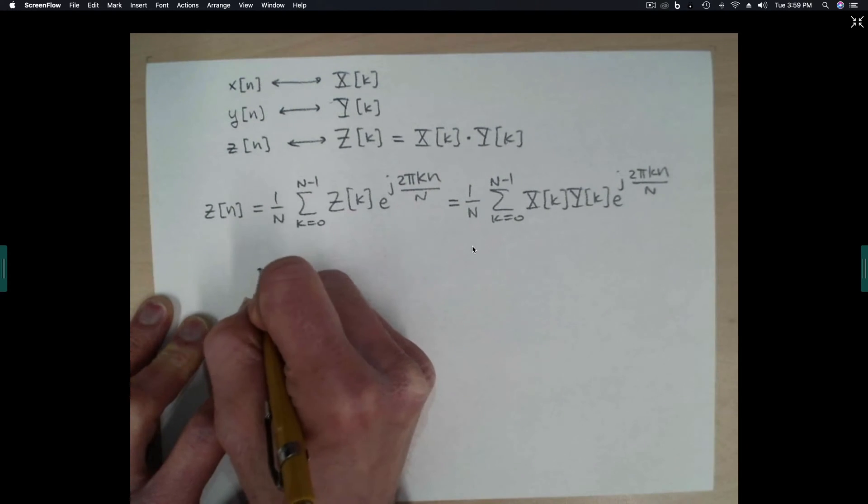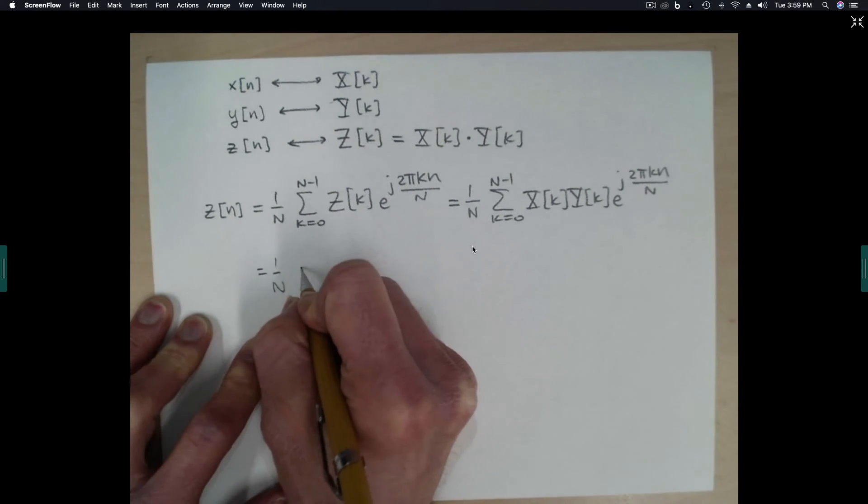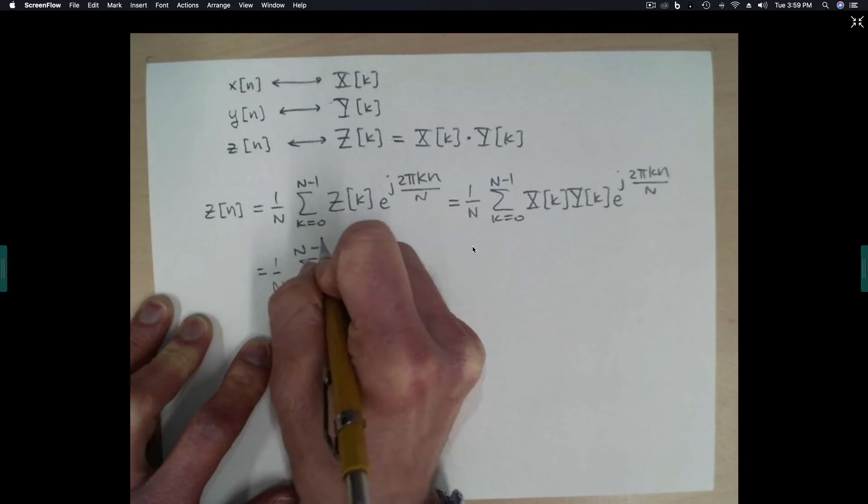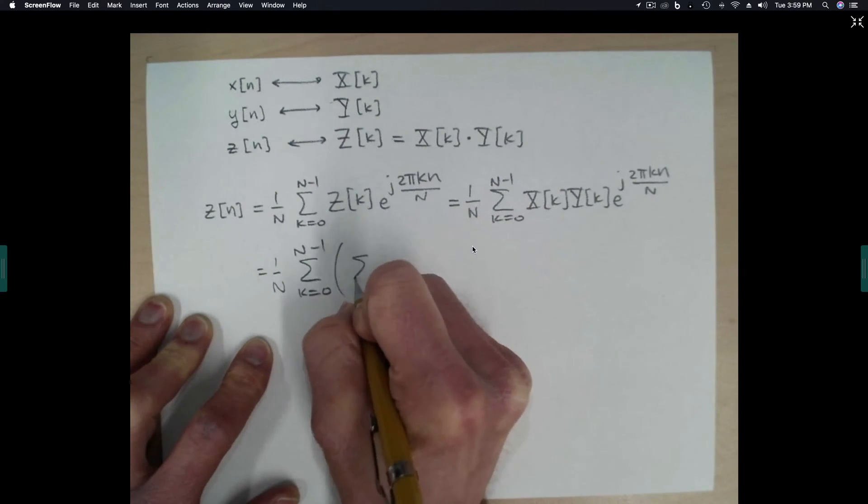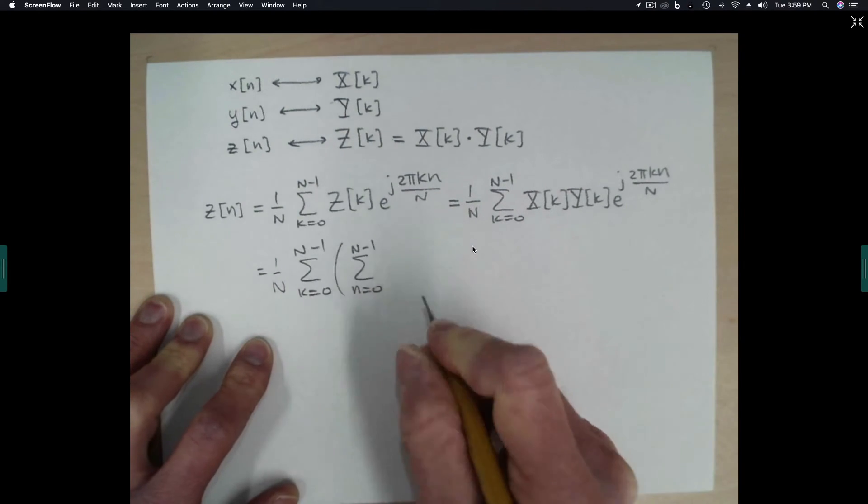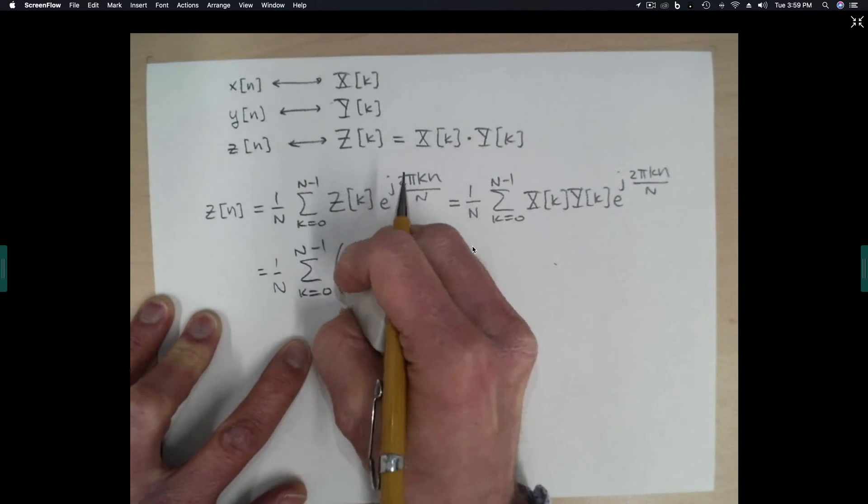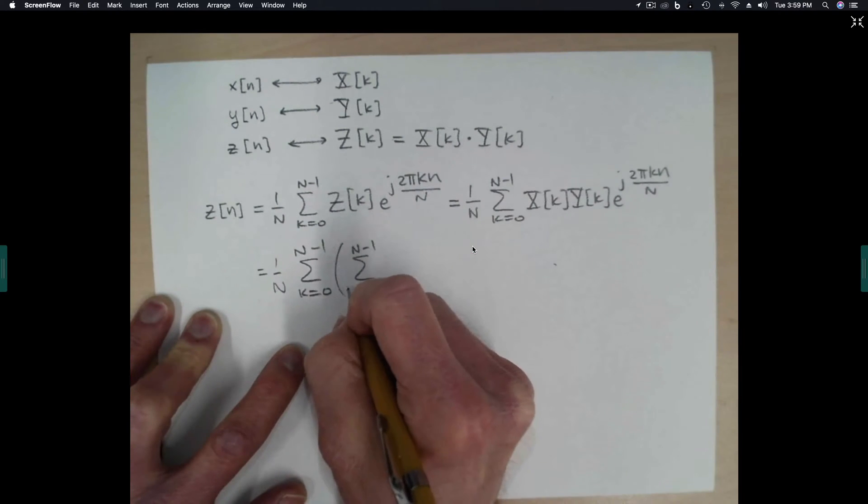The next step in this derivation is to substitute for either one, either X or Y. But let's go ahead and substitute the forward transform formula. We have to be careful here not to use the same letter twice. So let's say that this is m.